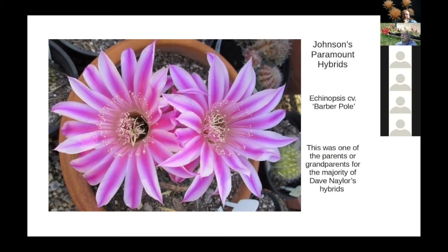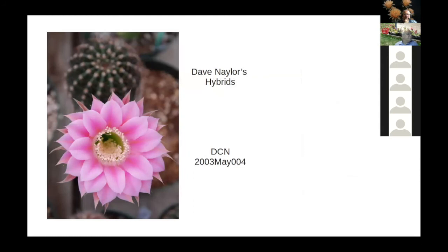We'll now look at some of my hybrids — you should see how the Barber Pole striping has shown up in most of mine. This is one of mine; it's got broader petals. I really like the flowers on this one — I can't say too much about it, but that flower I really like.